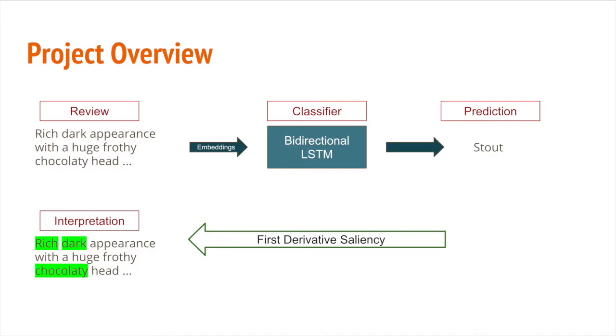We then intended to use first derivative saliency to determine which specific words in this review were weighted most heavily when the classifier made its prediction.